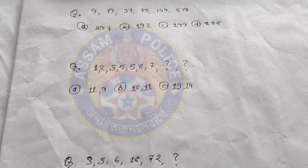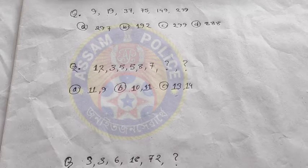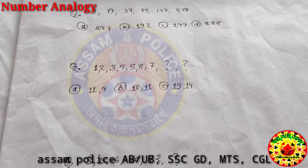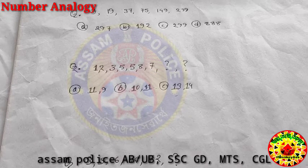Hello, good call, welcome back to my channel. In this video I will explain number analogy reasoning. So guys, let's start. The first question is: 9, 19, 37, 57, 149, 299. We need to find the relation between these numbers.